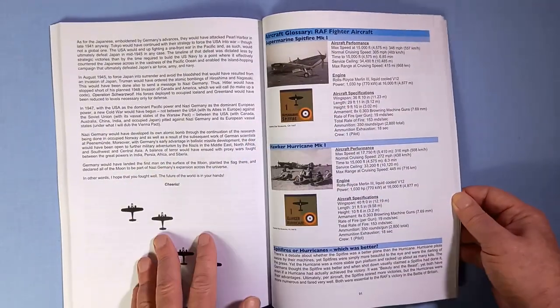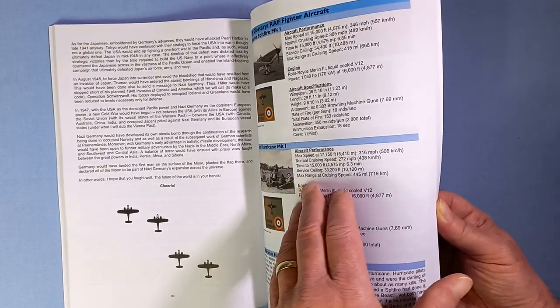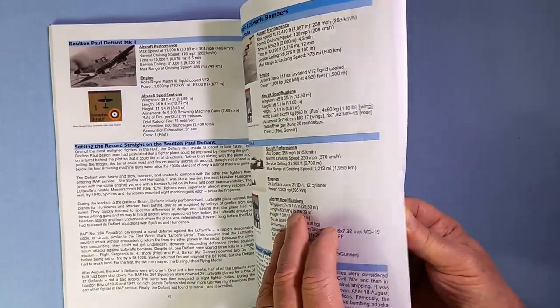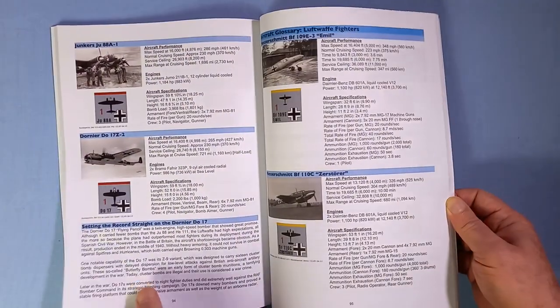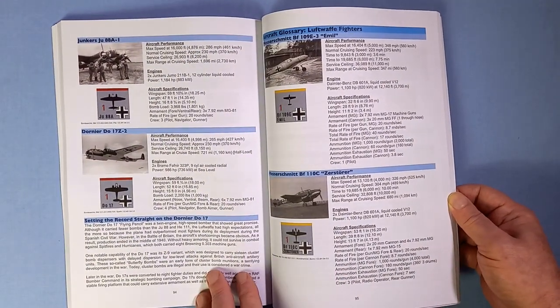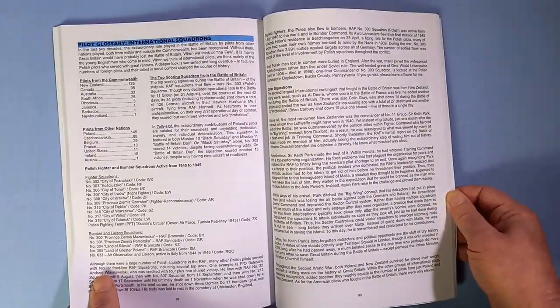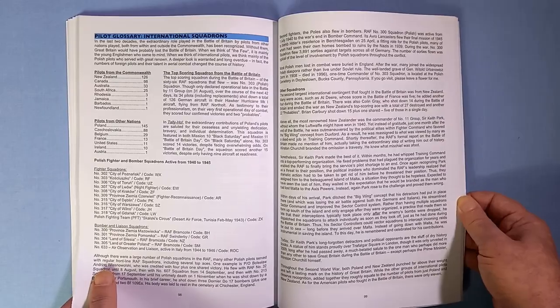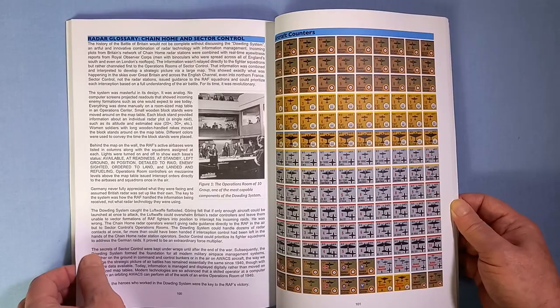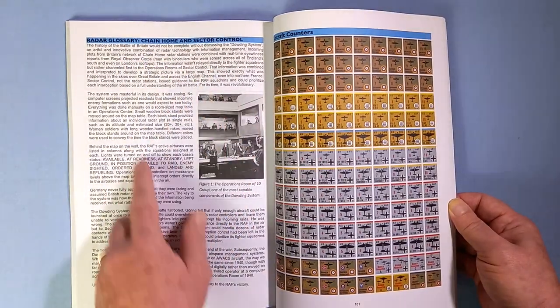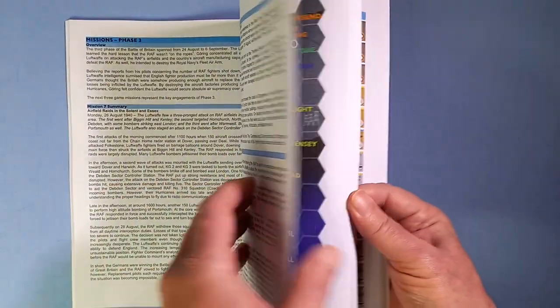And then next is the glossary of the aircraft involved in the game. Some great information here. Thomas certainly knows his stuff. So lots to read apart from playing the game. Some stuff about the international squadrons and the chain home and sector control, which you'll see on these maps. Here we are.